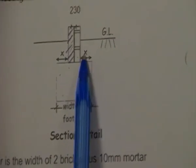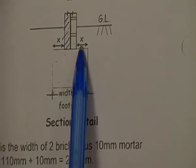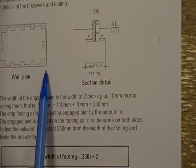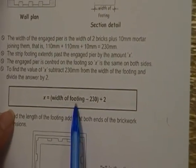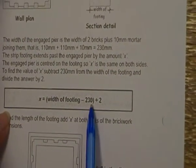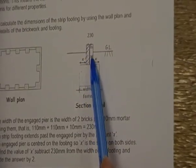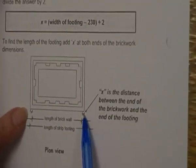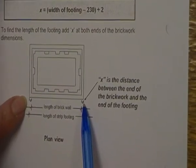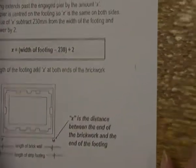Our job now is to work out what this extra is going to be added on to our dimensions. The rule is: it is the width of the footing minus the 230 for the two lots of bricks, the wall and the engaged piers, and we divide it by two because we're going to add it to each side.